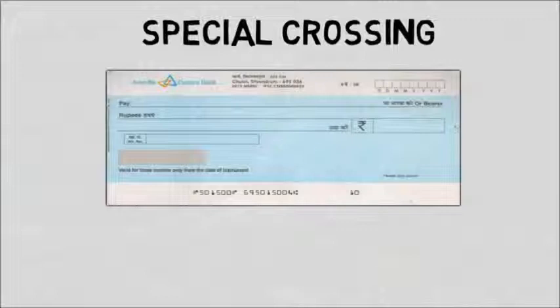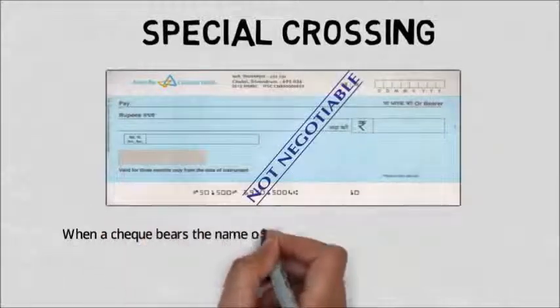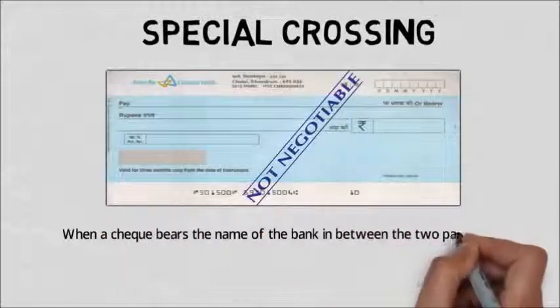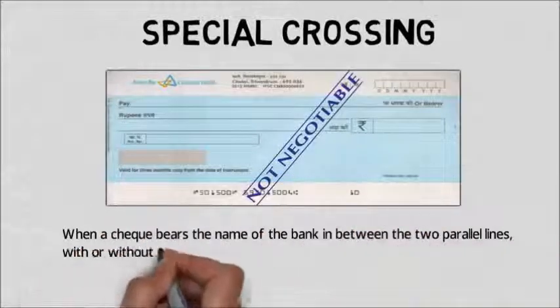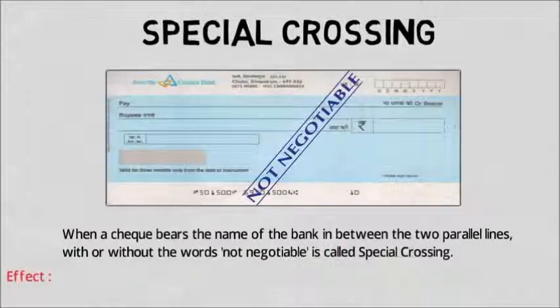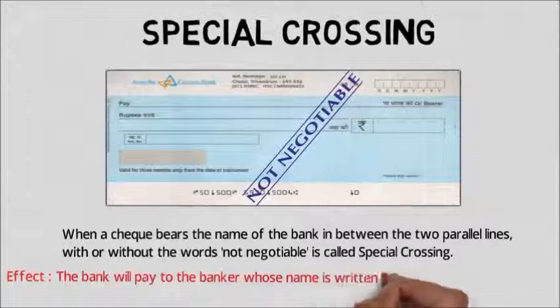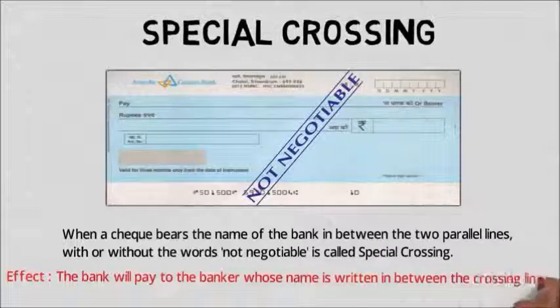In special crossing, the check bears the name of a bank in between the two parallel lines, with or without the words 'not negotiable.' The bank will pay only to the banker whose name is written between the crossing lines.